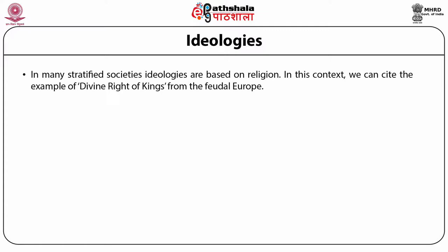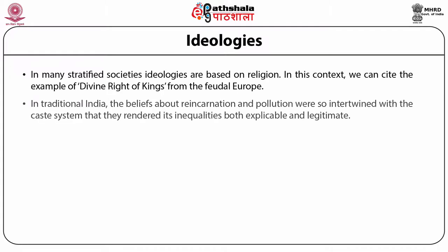In many stratified societies, ideologies are based on religion. We can cite the example of divine right of kings from feudal Europe. In many ancient civilizations such as the Aztec, the Inca, the Japanese, and the Egyptian, the ruler himself was believed to be a divine or semi-divine being. In traditional India, the beliefs about reincarnation and pollution were so intertwined with the caste system that they rendered its inequalities both explicable and legitimate.